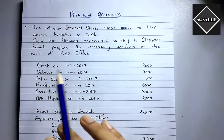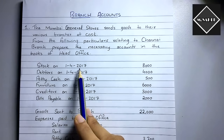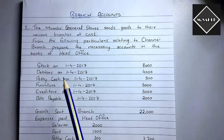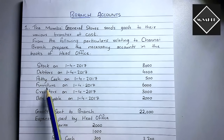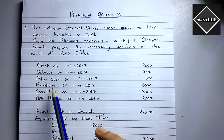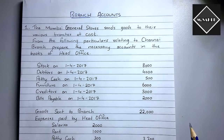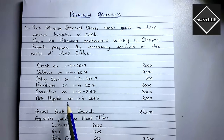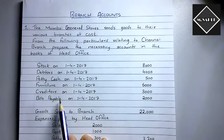Stock on 1/4/2017 — that's the opening date of the accounting year, so these are the opening balances. Stock, debtors, petty cash, and furniture are assets, so these will be debited in the branch account. Creditors and bills payable are liabilities, so the opening balances of liabilities will come on the credit side of the branch account as 'By Balance b/d'.